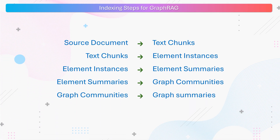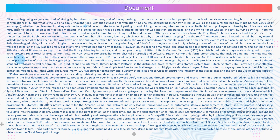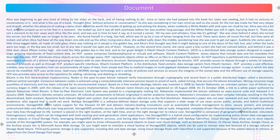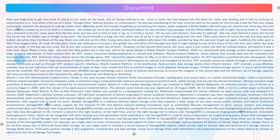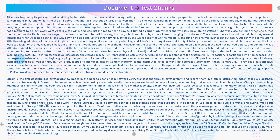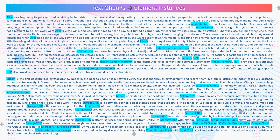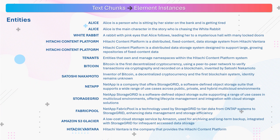Now we are ready to learn how a knowledge graph is created using Graph RAG. First, a document is split into text chunks using an appropriate chunk size. Next, named entities are extracted from each of the text chunks. Relationships between related entities are also identified in this step. From the knowledge graph perspective, nodes and edges are identified in this step.